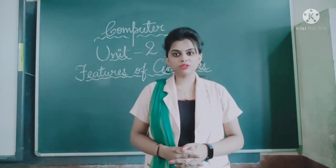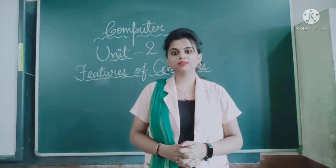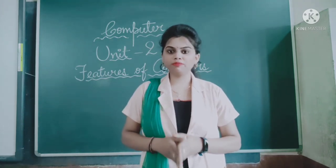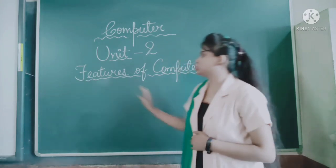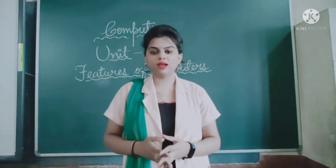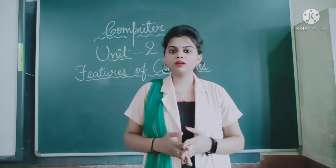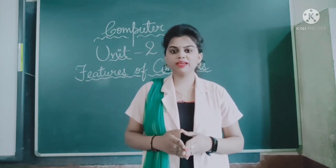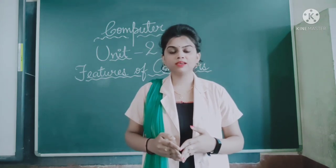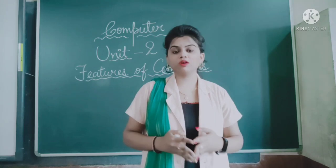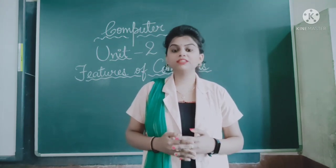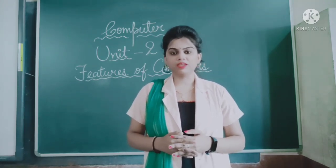A computer is an electronic machine and it works on its own. So before we start the chapter, tell me: what do you mean by features of a computer? Features means qualities — qualities or characteristics of a computer. Each human being has some qualities or characteristics. Just as humans, computers are also having some characteristics or qualities. These are called the features of a computer. So let us see some features of a computer.